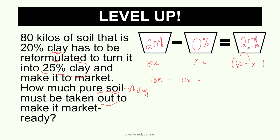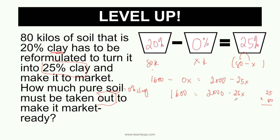25 times 80: four 25s make 100, so forty 25s make 1,000, and eighty 25s make 2,000. So 1,600 minus 0x equals 2,000 minus 25x. Since 0x is zero, the left side is just 1,600. Now our goal is to keep everything positive and isolate x. Because the x term is negative on the right side, I'll move it to the left — it becomes positive 25x. And 1,600, which is positive on the left, moves to the right and becomes negative.